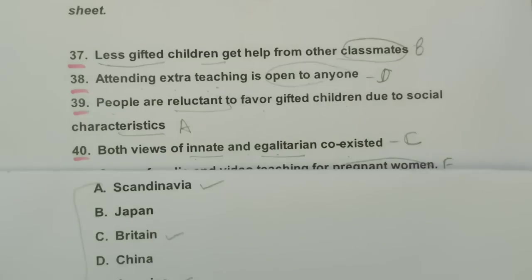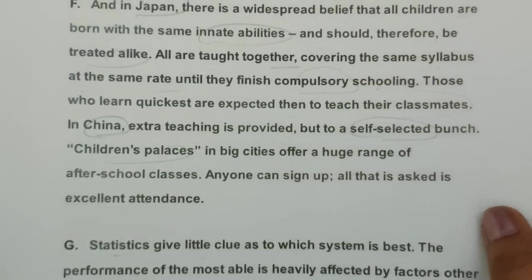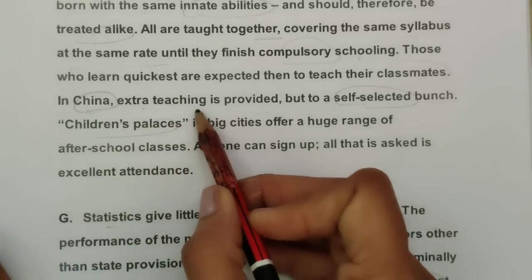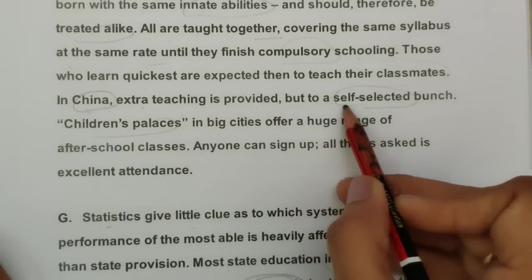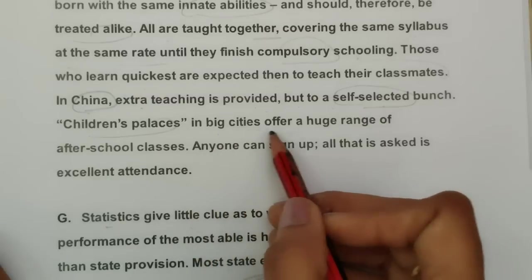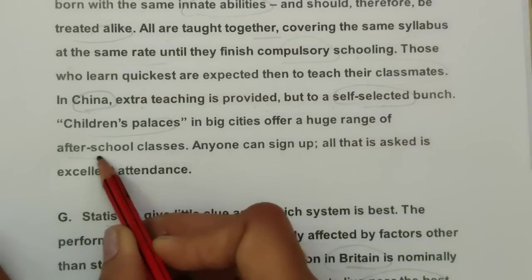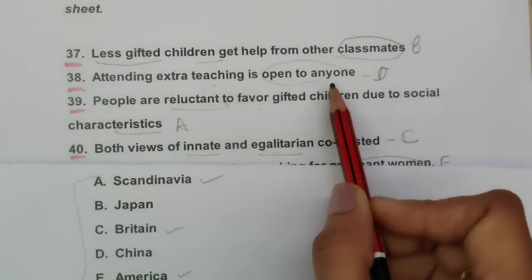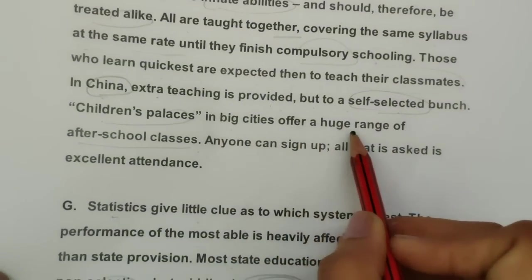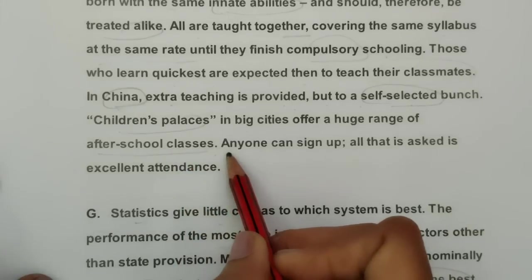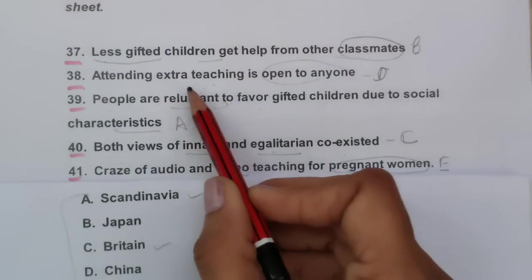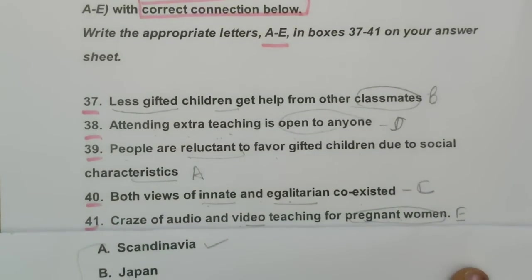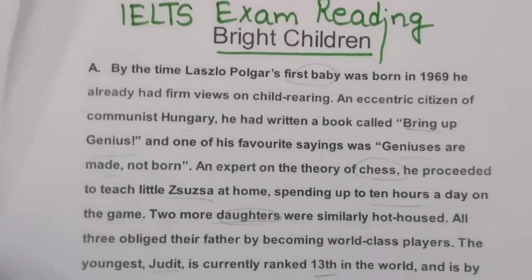For China: 'extra teaching is provided, but to a self-selected bunch. Children's palaces in big cities offer a huge range of after-school classes — anyone can sign up.' This matches option D: 'attending extra teaching is open to anyone.' China = D. And that's how we complete this IELTS reading on bright children.